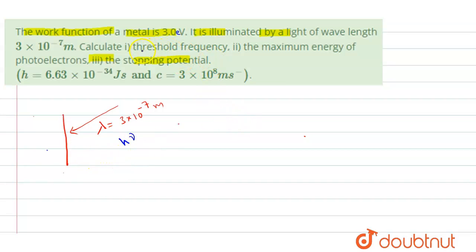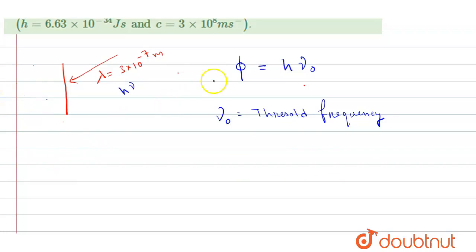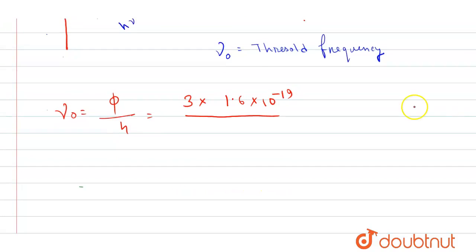In the first part, we calculate the threshold frequency. The work function equals h×ν₀, where ν₀ is the threshold frequency. So threshold frequency ν₀ = φ/h. The value of φ is 3 electron volt, which is 3×1.6×10⁻¹⁹ J, divided by Planck's constant 6.63×10⁻³⁴ joule-second. This gives 0.72×10¹⁵ hertz.